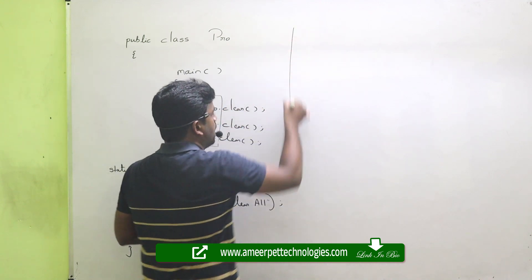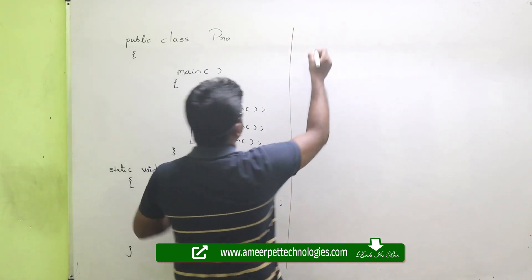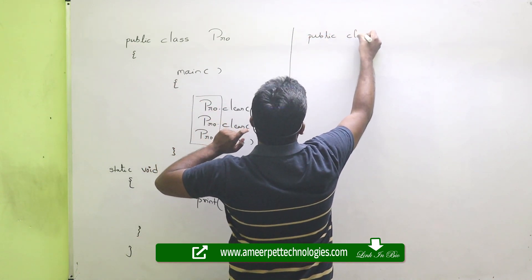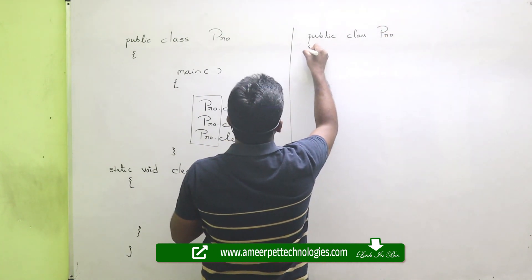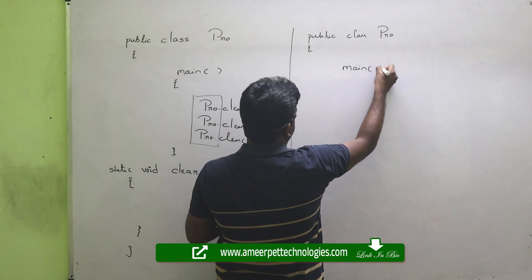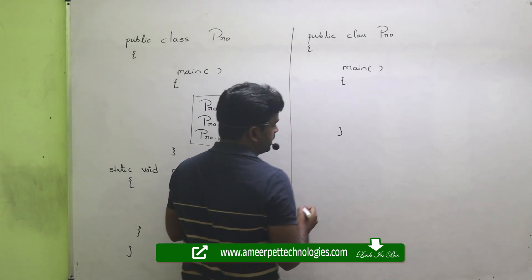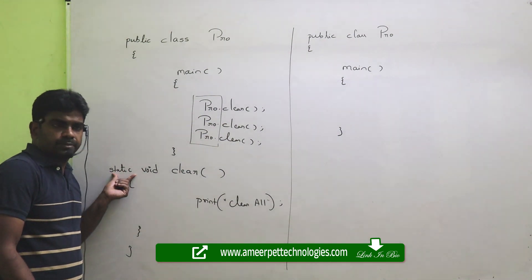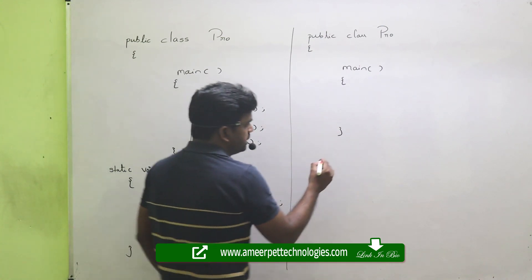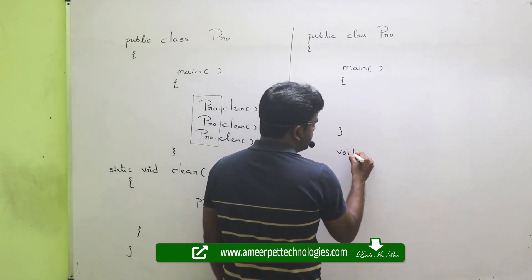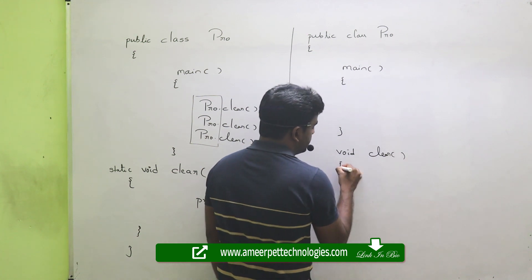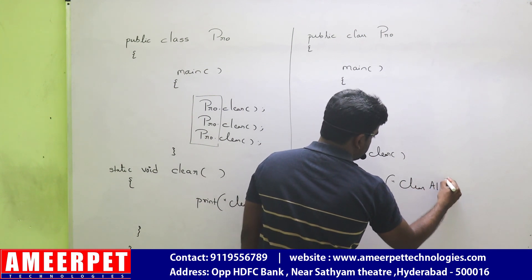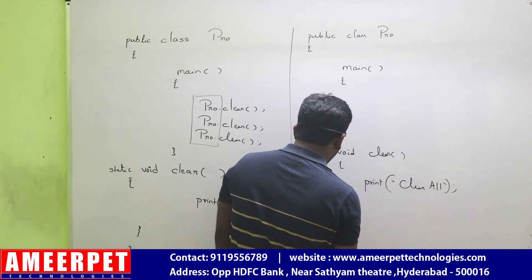Next, I am going to explain how to define the instance method. It is very simple. Taking the same class 'pro', you can practice both in parallel. Execution starts with the main method. What is an instance method? A method without the static keyword is called an instance method. Just remove the 'static' keyword. So simply: void clear — the same method — and inside you can print any message, suppose 'clear all'.